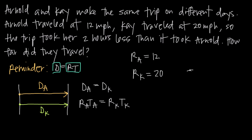The trip took Kay two hours less than it took Arnold, so Kay's time T sub K is equal to Arnold's time T sub A minus 2. To see why, if the trip took Arnold 10 hours, then T sub A is 10, and we get 10 minus 2, so Kay's time is 8. That makes sense because we know it took Kay two hours less than Arnold, and 8 is 2 less than 10. So we've written an accurate equation relating Kay's time to Arnold's time.